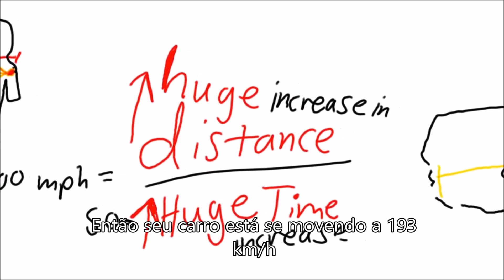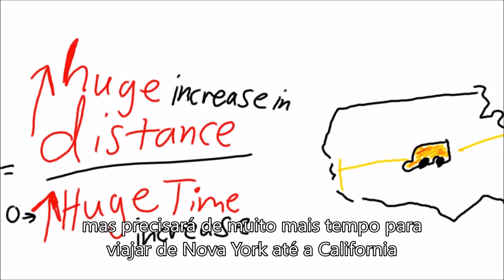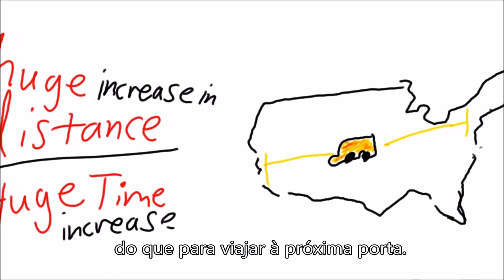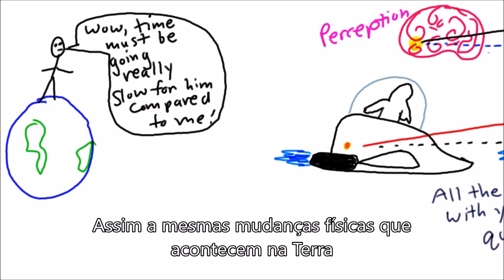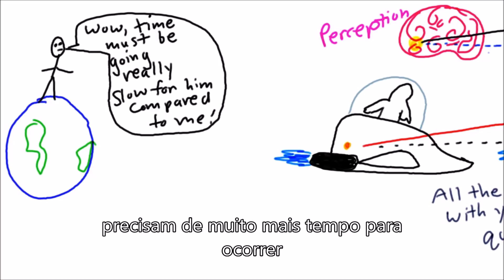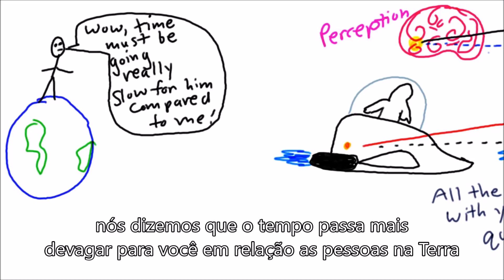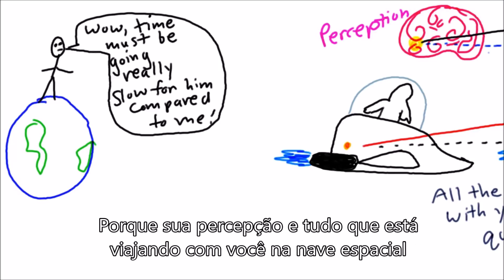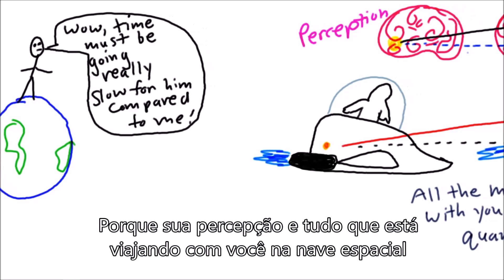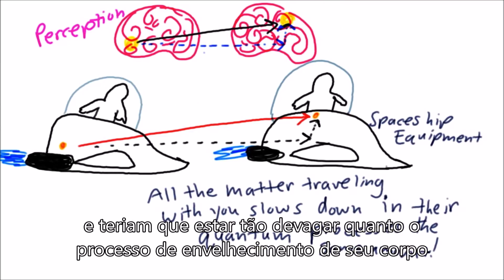So your car is still moving 120 miles per hour, but it's going to take a lot longer to drive from New York to California than it is to drive next door. Since the same bodily change that happens on earth takes much longer to occur when you are moving so fast relative to earth, we say that time slows down for you relative to people on earth. But you wouldn't notice a difference because your perception and everything traveling with you on the spaceship also rely on light-speed particles and would slow down just as much as your body's aging process.